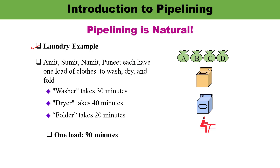All of them have to perform a task related to clothes. There are three steps: washing, drying, and then folding. If washing takes 30 minutes, drying takes 40 minutes, and folding takes 20 minutes, then when the first person Amit does the task, it takes 30 + 40 + 20 = 90 minutes. One load takes 90 minutes. So when four persons perform the same task one after the other, that is 90 minutes into four, which is 360 minutes — six hours in total.